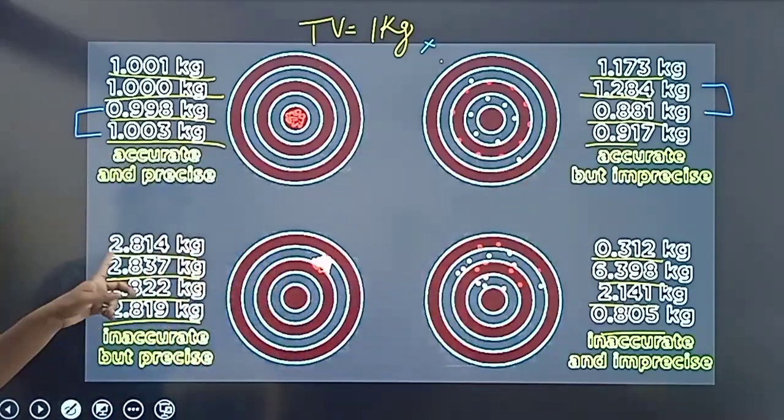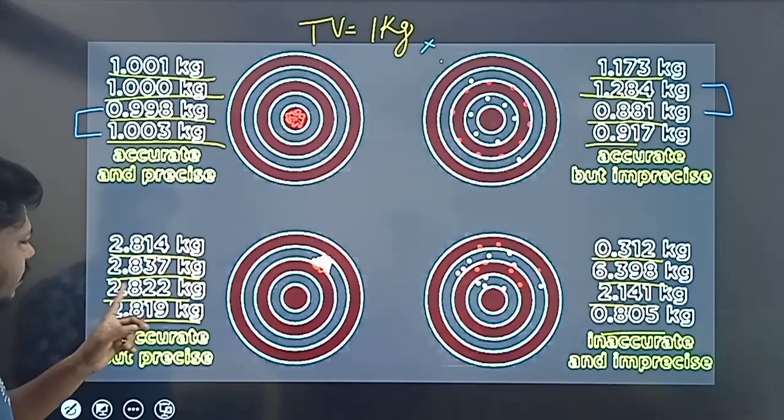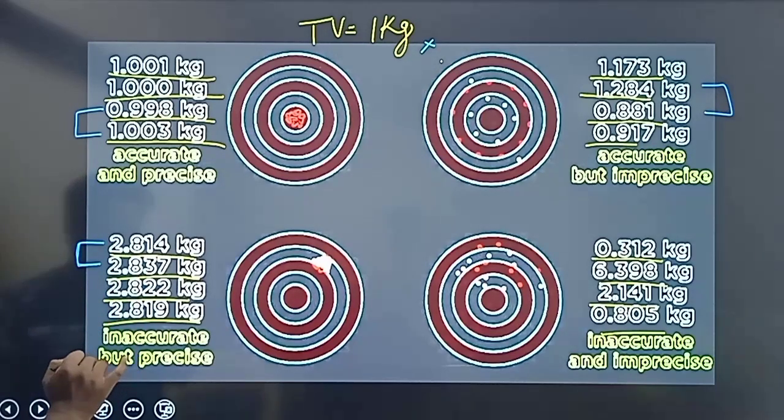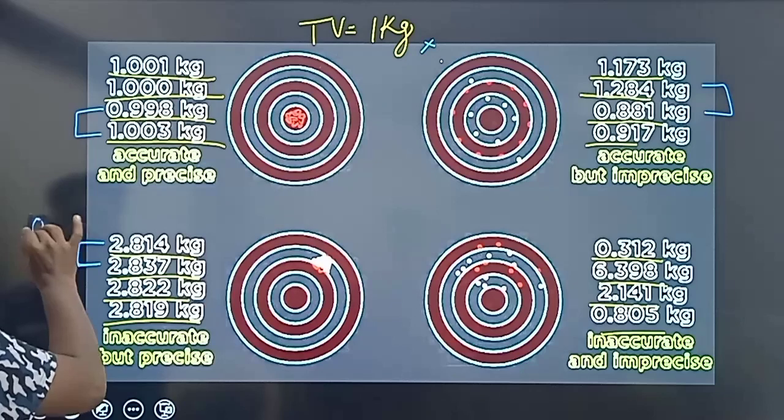This is not precise. You can say values like 2.81, 2.83, 2.82, 2.81. Now these are different values. There are small differences. You can say these are true values clustered together.